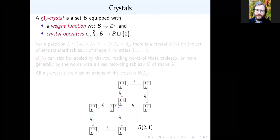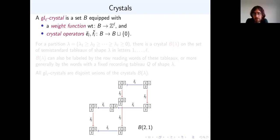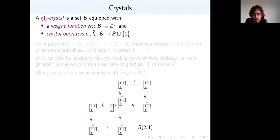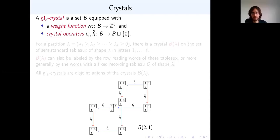Question: Jennifer Morse and others, and also Lascoux-Schützenberger, have worked with a companion map on fillings where you exchange the shape and content of a tableau. Are you familiar with this? I think I know probably what's happening there, but I haven't directly read those papers. At the end of the talk, I'm going to tell you about a map which is probably equivalent to that — you can maybe bring up that question again and we can see how it's connected.